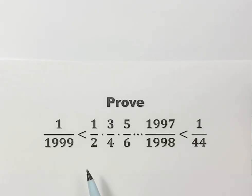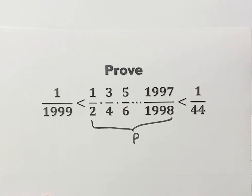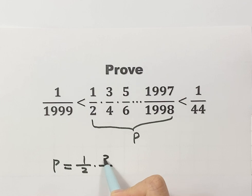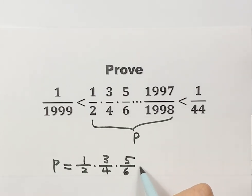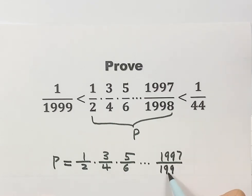In this video we are going to prove a double inequality. For convenience, we're going to let P denote this product. We just need to prove P is between the two fractions. So let's first prove P is bigger than the left fraction. P equals 1/2 times 3/4 times 5/6, continuing until the last term, which is 1997/1998.